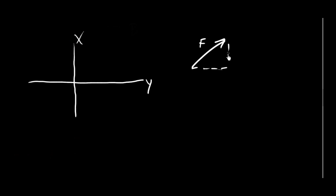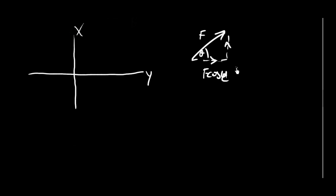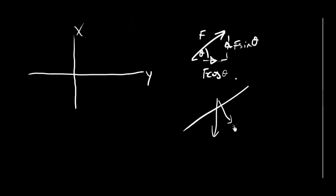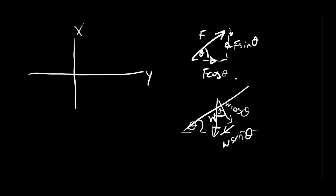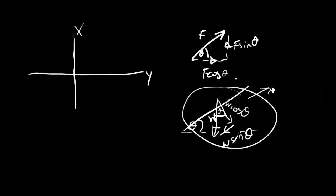In those previous questions, if that was the force F and theta was the angle, the components at right angles would be F cos theta and F sin theta. When we did the question on the slope, we had the weight going down and we split it into perpendicular to the slope and along the slope — W cos theta and W sin theta. So we were getting one force and splitting it into two.